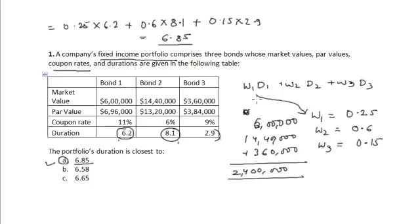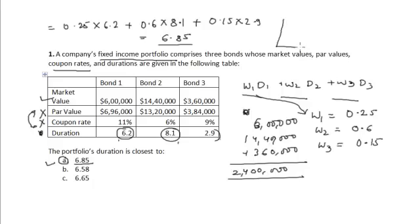From this question we learned that the weights for calculating portfolio duration are based on the market value of the bonds — not on the par value or coupon rate. Additionally, the approach of computing portfolio duration as the weighted average of individual bond durations is based on the assumption of a parallel shift in the yield curve.